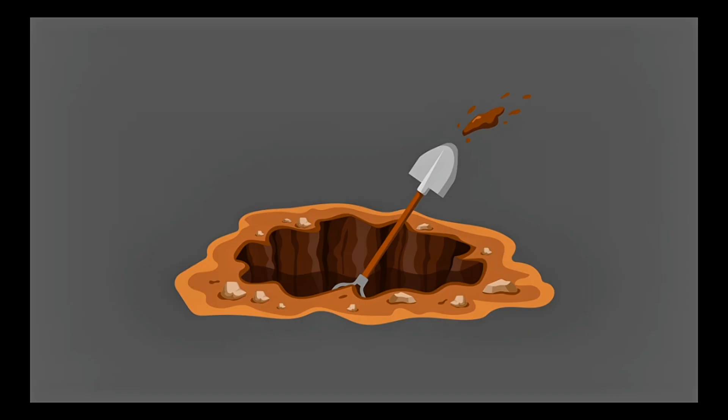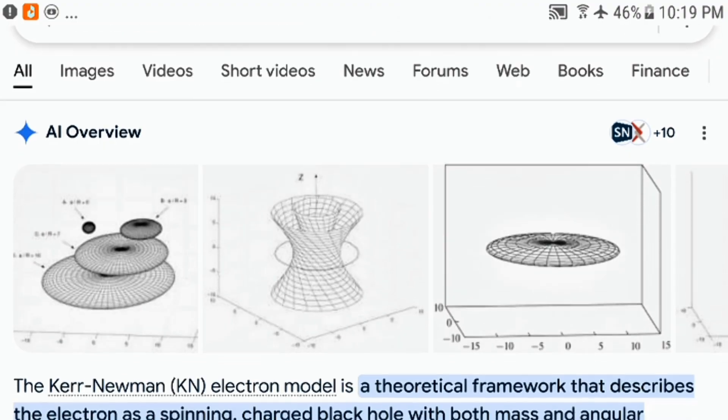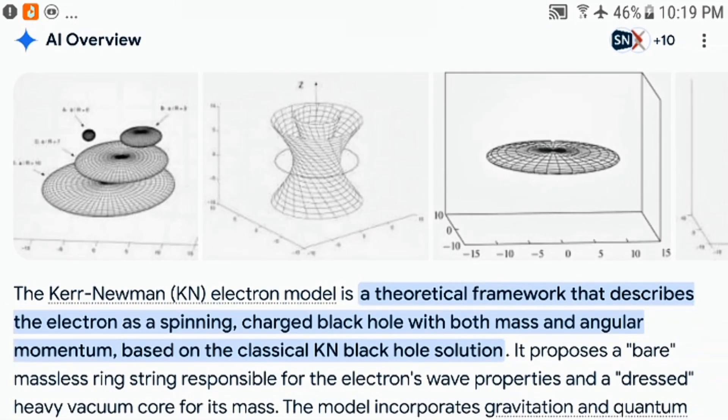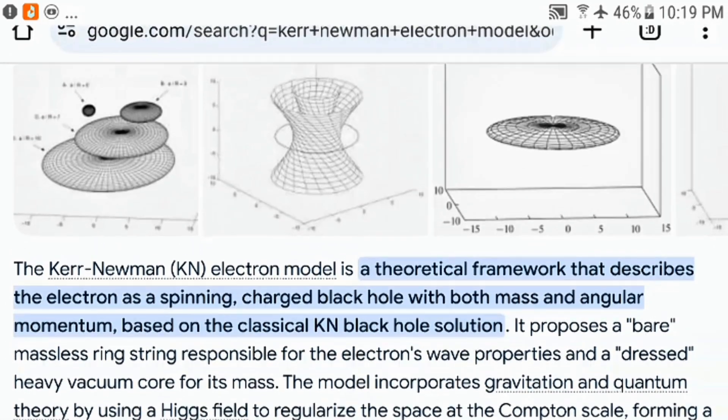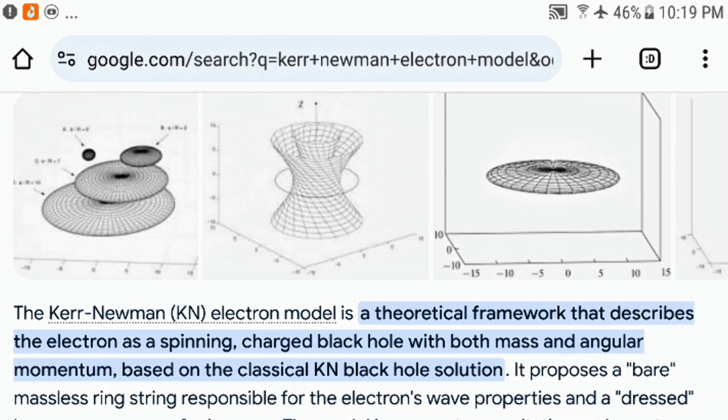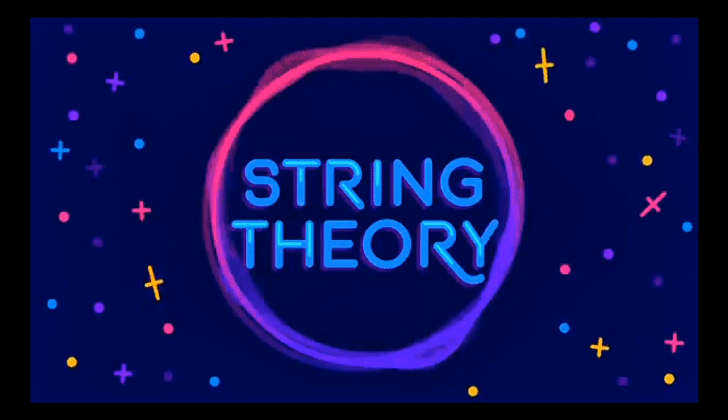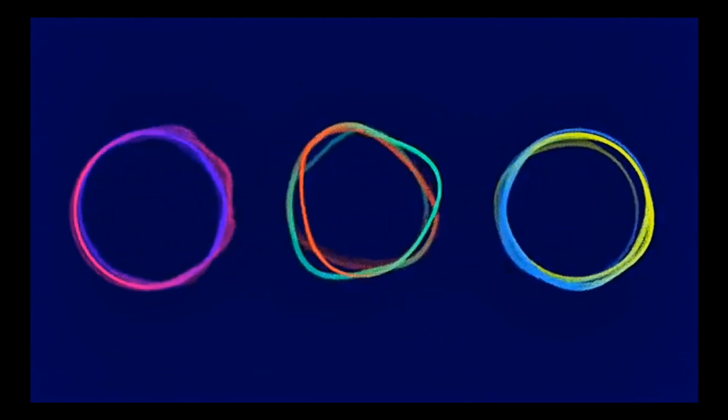After much digging, I found the most shocking thing—the Kerr-Newman electron model. This model treated the electron as a black hole without an event horizon mathematically, and the math does work out. At this point, if it didn't produce any testable prediction like string theory, that would be totally fine. The fact that the math works out is shocking enough.